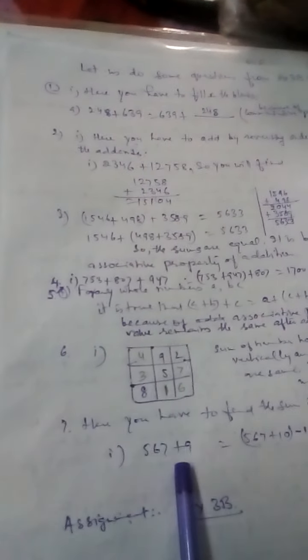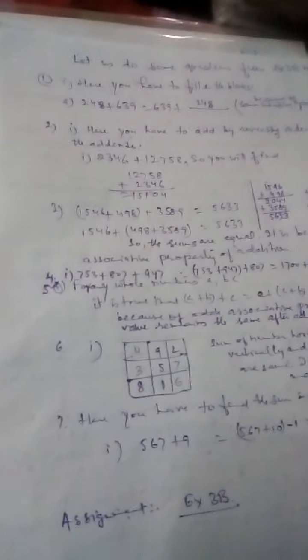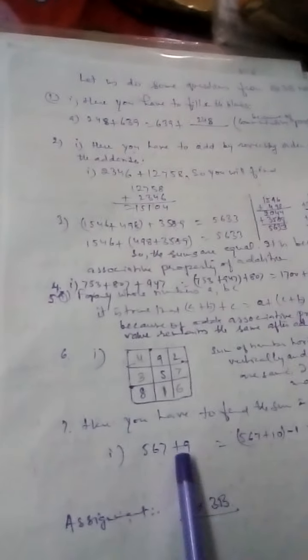You can take interest in such type of questions. And now you have to find the sum by short method, like 567 plus 9. 567 plus 9 can be added as 567, first you add 10 to it, then you will get 577, and subtract 1 from it, then you will get 576. So this is the short method to get the sum.